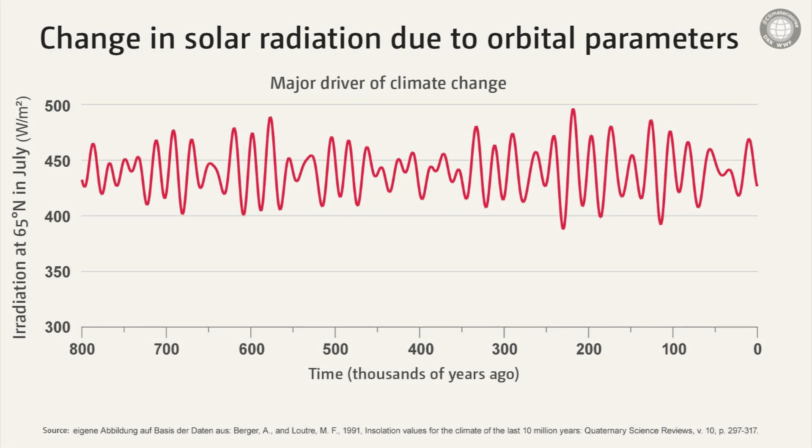Altogether, the change in orbital parameters cause the incoming solar energy to be distributed differently across the Earth's surface. This is a very important driver of climate change. However, these changes only occur on timescales of several ten-thousands to a few hundred-thousand years.